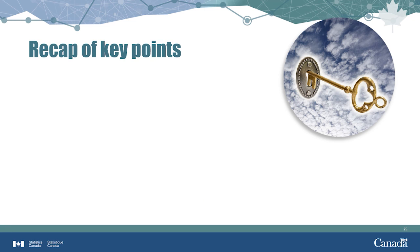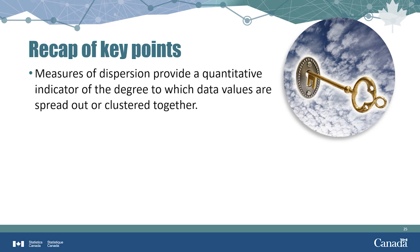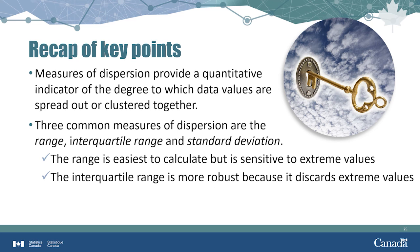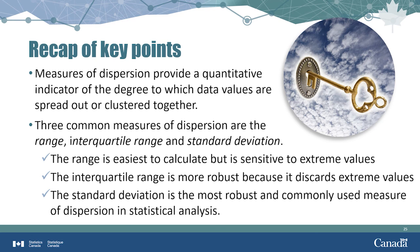Measures of dispersion provide a quantitative indication of the degree to which data values are spread out or clustered together. In this video, we looked at three common measures of dispersion — range, interquartile range, and standard deviation. We also learned that data can be bell-shaped, with most values clustered in the middle, which is often called a normal distribution.